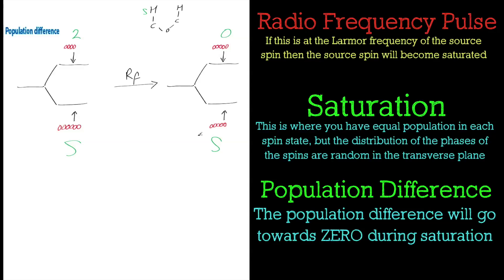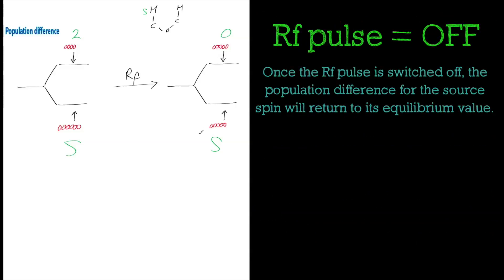In this example, the population difference at the beginning was plus two. The RF pulse puts everything in flux. The upper state is going to the top state, the top state to the down state, until it reaches a point where you can't tell the difference. Once the RF pulse disappears, the nucleus will try and regain its thermal equilibrium values in a natural process where it tries to populate the ground state. That is the essence of saturating the source spin.